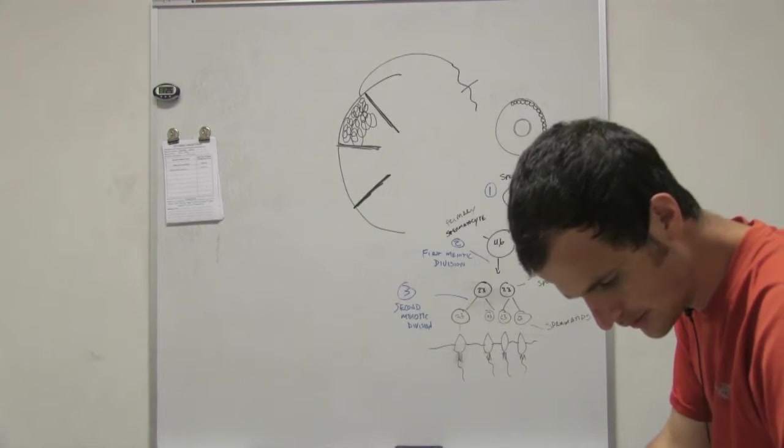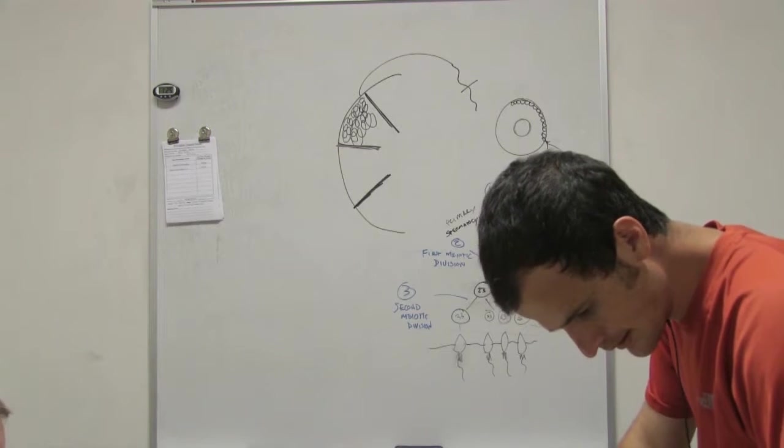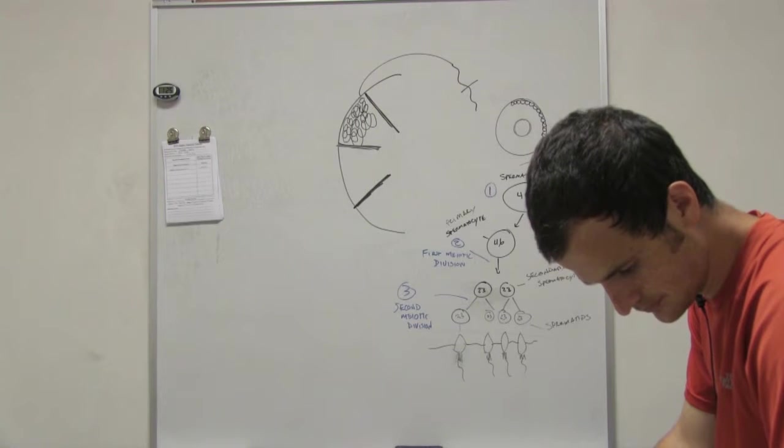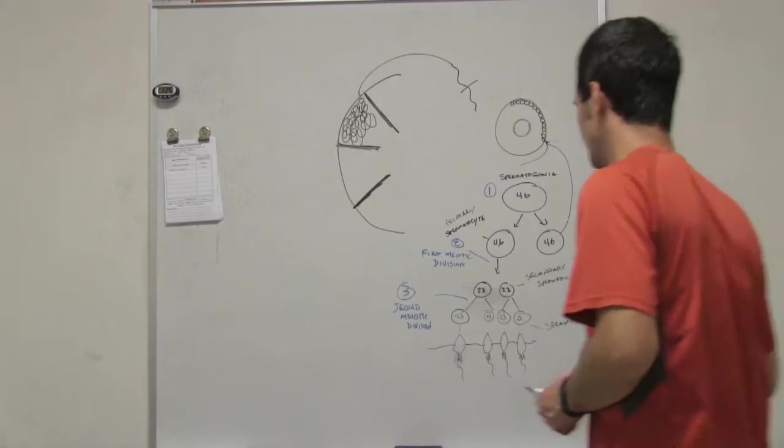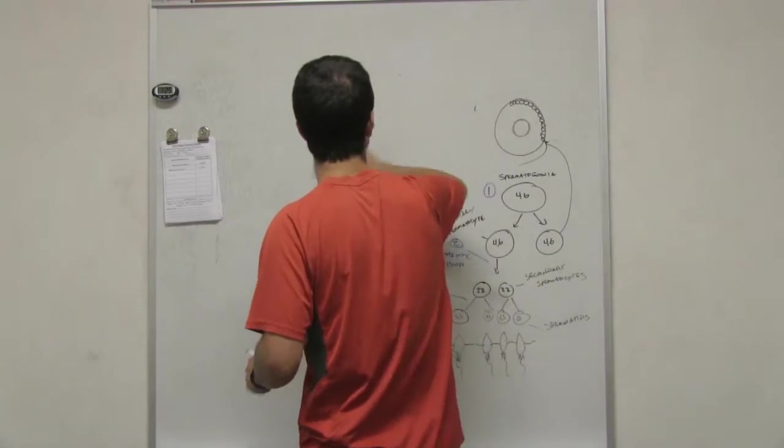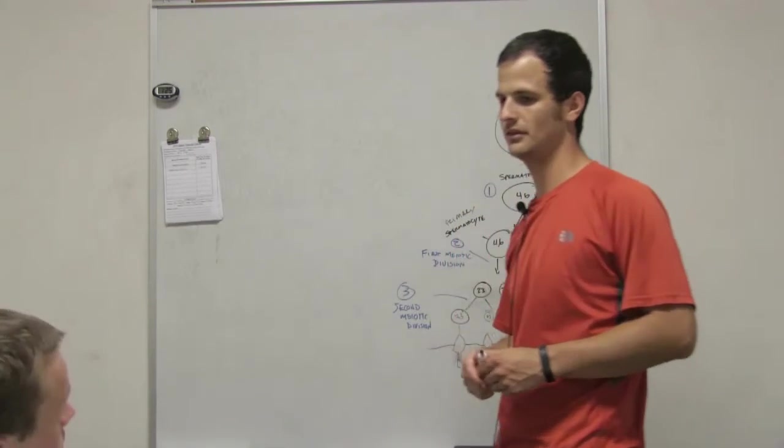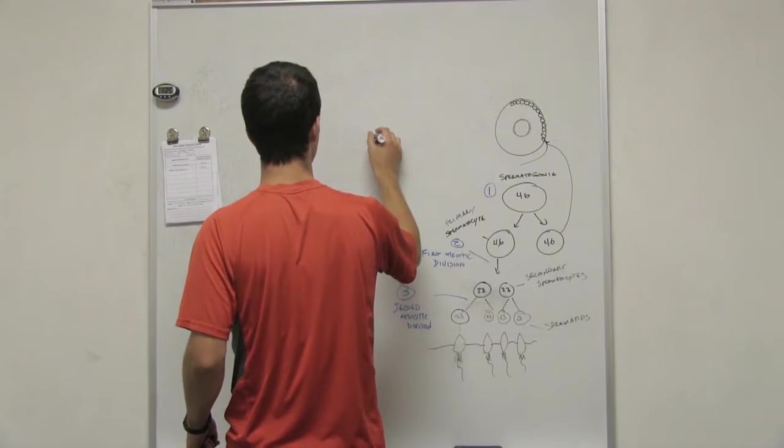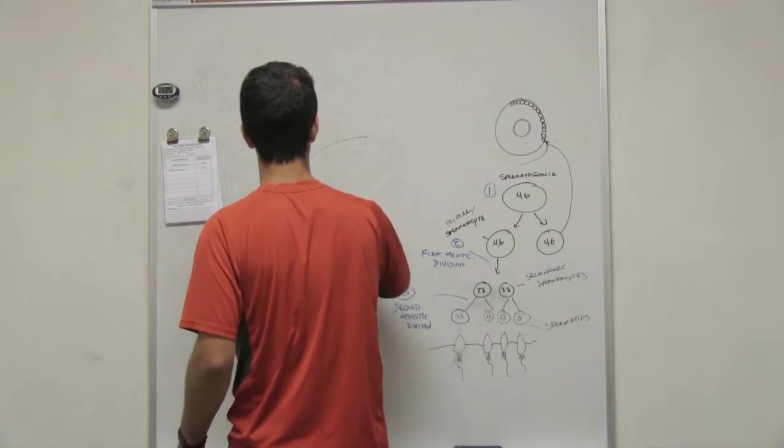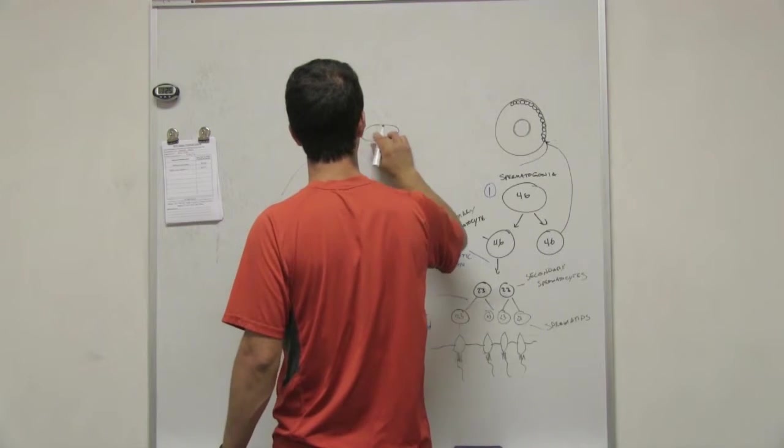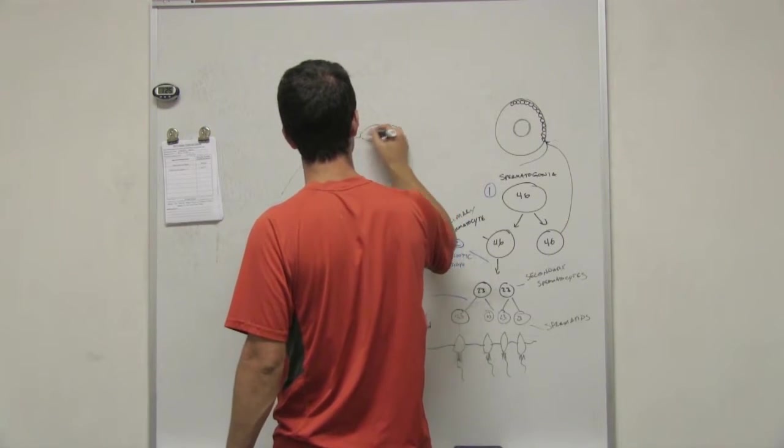The prostate gland, though, not only secretes fluids, but it's also involved with blocking off. The prostate gland has, so we've got this is your urethra going out through your prostate gland, so you've got kind of two channels.